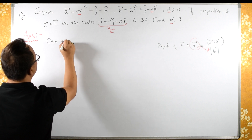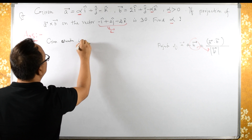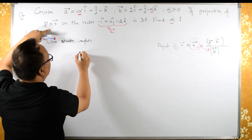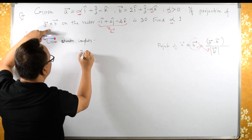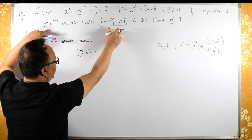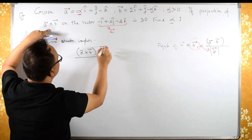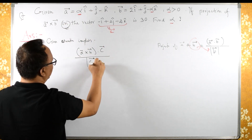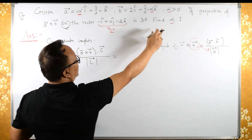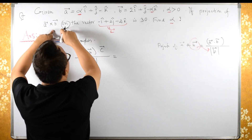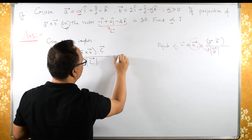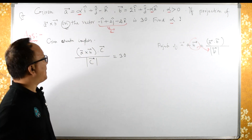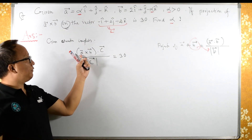The projection of a cross b on vector c means we take a cross b dot c upon the magnitude of c. It is given that this projection equals 30. From here we need to find alpha. For this we first need to find a cross b.